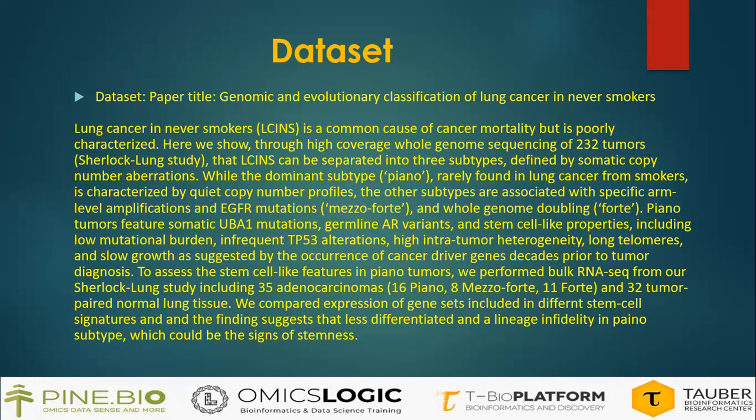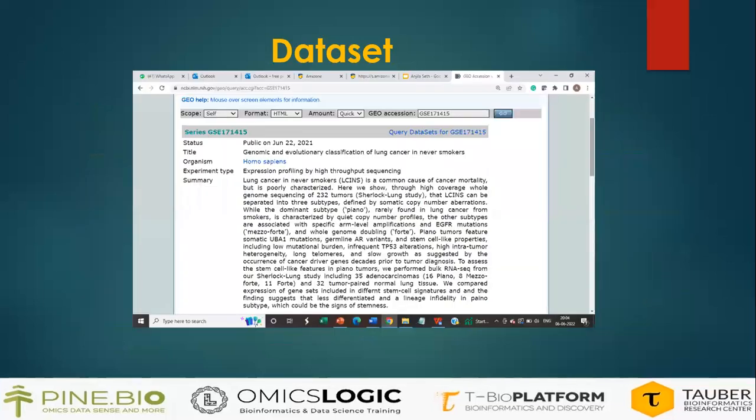For this study, we have chosen a dataset taken from the title 'Genomic and Evolutionary Classification of Lung Cancer in Never Smokers.' As we know, the incidence of lung cancer is very common in people who smoke regularly, but cases are also increasing in people who have never smoked. In this paper, the whole study is divided into three dominant subtypes: piano, meso forte, and genome doubling forte. The Sherlock Lung study includes 35 adenocarcinomas and 32 tumor-paired normal lung tissues. The findings suggest that the less differentiated and linear features in the piano subtype could be a sign of stemness. This is the dataset page where we can find information on the organism, the summary of the paper, its title and status.